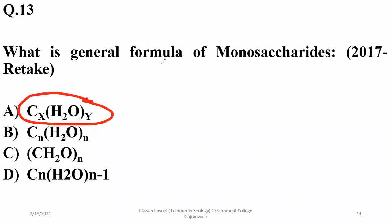For monosaccharides the formula is CxH2Oy where x and y are usually equal. For disaccharides, we will choose a different formula that accounts for the loss of one water molecule during condensation.